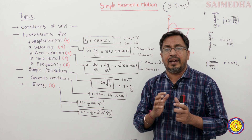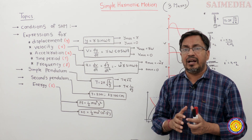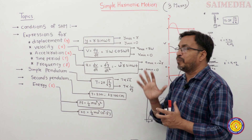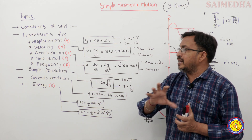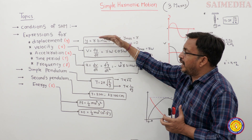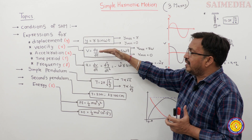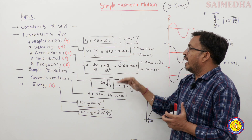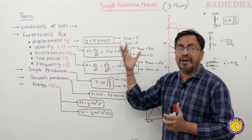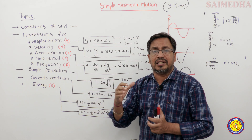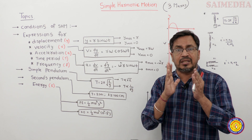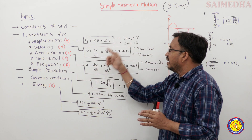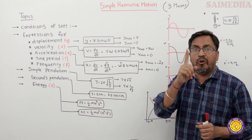In the same manner, for acceleration also, we find maximum acceleration and minimum acceleration. So students, here we have displacement, velocity, and acceleration equations — at what position each is maximum and at what position each is minimum. When we get all these formulas for these six cases, we get one question.